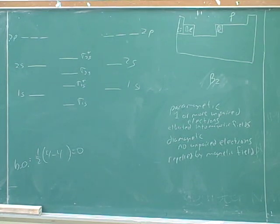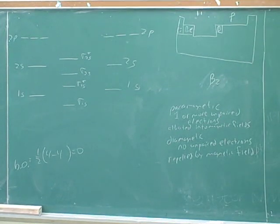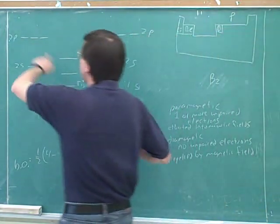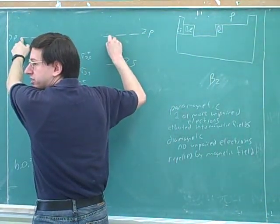So let's go through this. So what have we got so far? We've already done sigma 2s and sigma 2s star, right? Now, let's think about the overlap between these two p orbitals now.